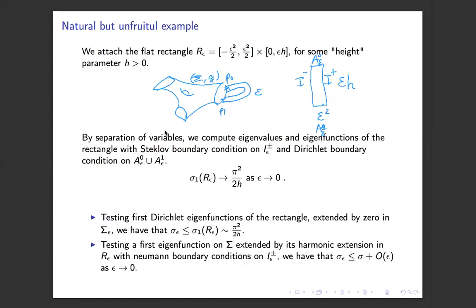Similarly, if we test the first eigenfunction on the surface sigma, extended via its harmonic extension in the rectangle, we have that the first Steklov eigenvalue of the whole surface is less than the first Steklov eigenvalue of sigma, up to an error term coming from the harmonic extension. By test functions we can also prove that sigma epsilon converges to the minimum of these two quantities.